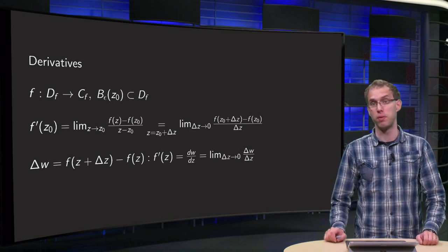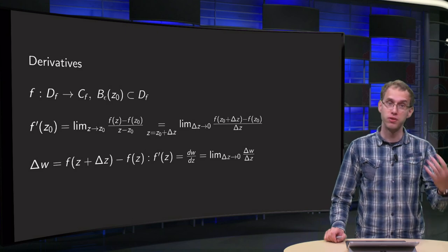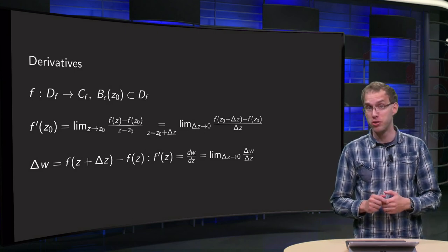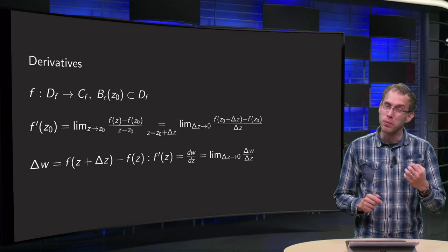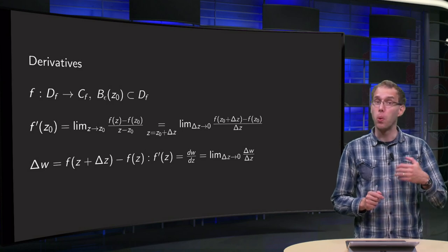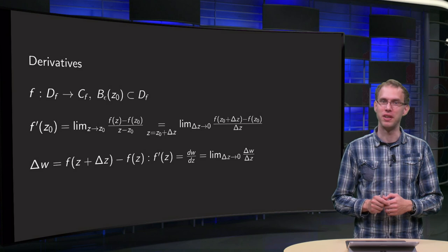Continuity is an easy property of complex functions. Continuity of u and v implies continuity of f. But what about differentiability? Would this work in the same way? Let's take a look at this video.